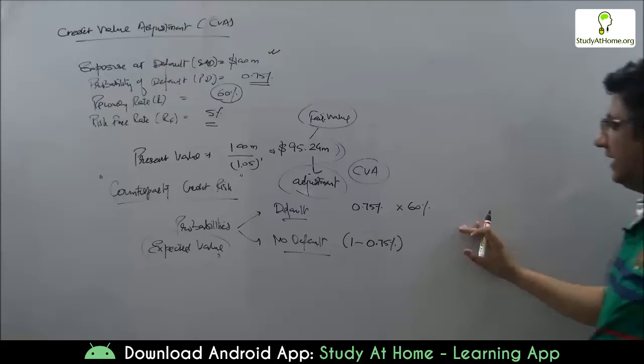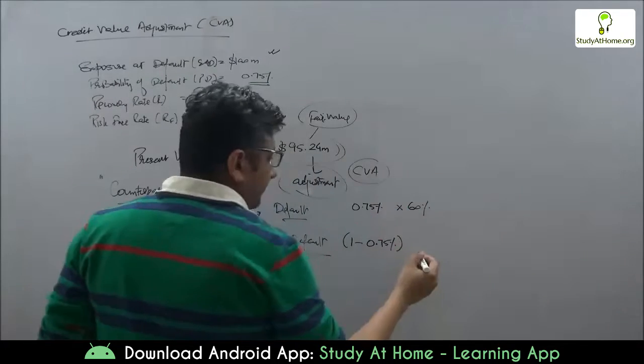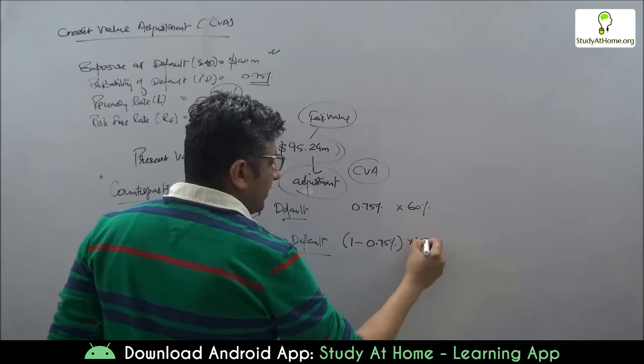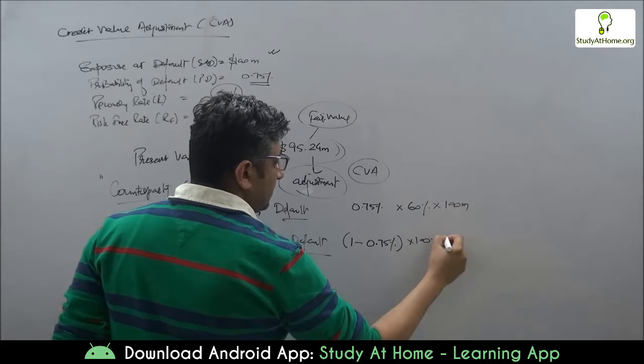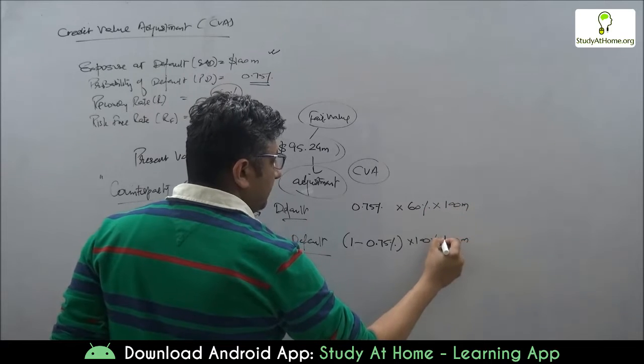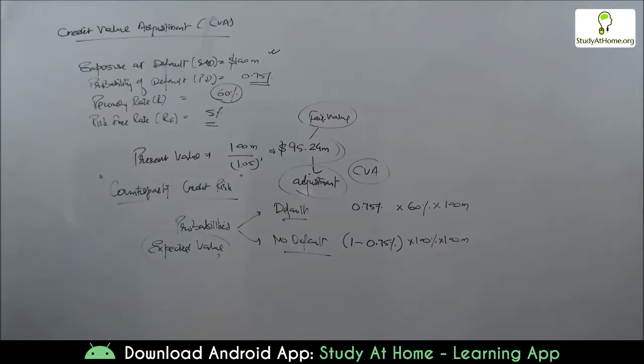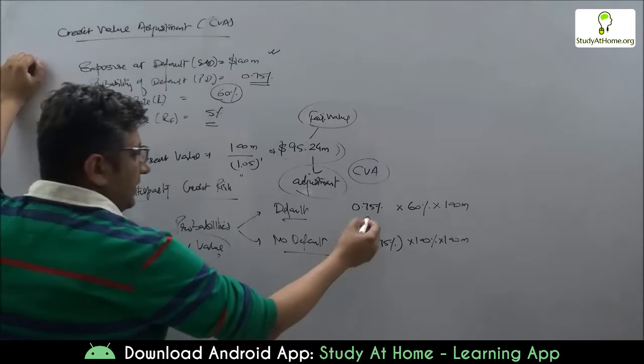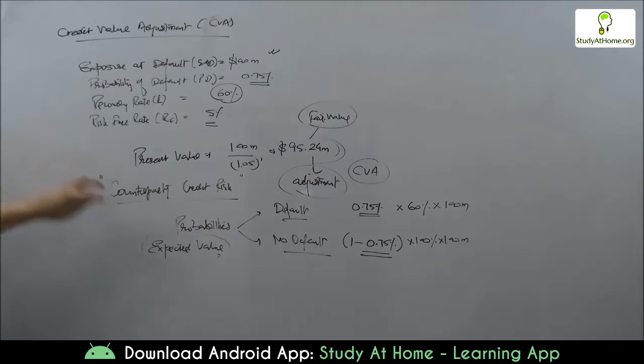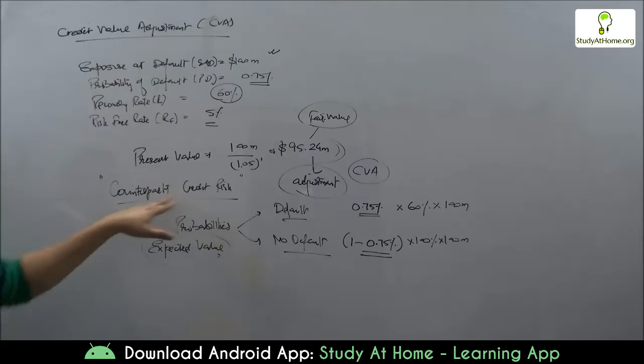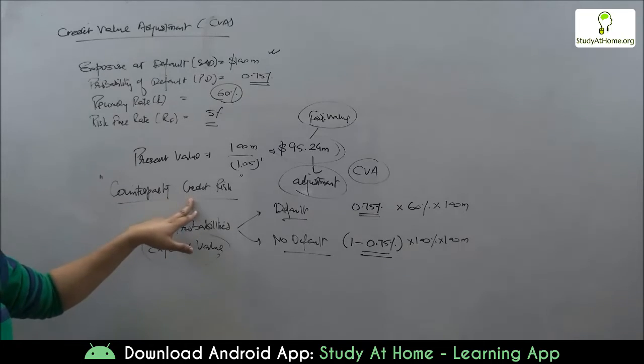Whatever is my exposure, I shall receive 60 percent out of that. But if it does not default, then I shall receive the entire amount. The amount we are talking about is 100 million. Based on these probabilities, we are able to take the present value of these expected values to give us the adjusted value after taking into consideration the counterparty credit risk.